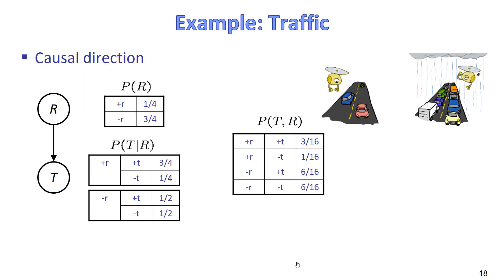Now let's talk about the notion of causality. For simplicity, we can assume that links in the net encode causality — for example, rain causes traffic, so we make an arc from R to T. This gives us a CPT indicating P(T | R), which is intuitive. But this is not necessary.